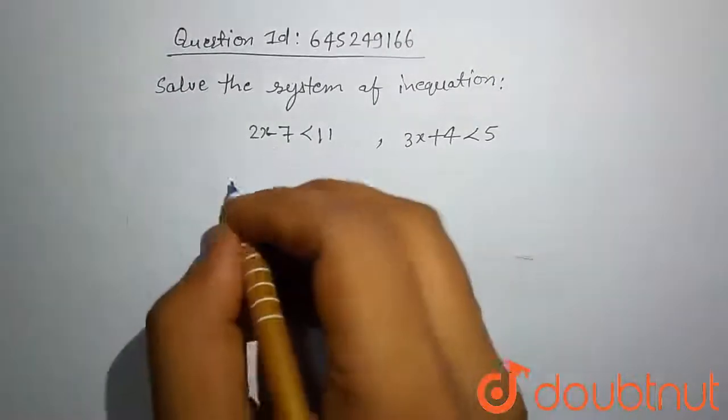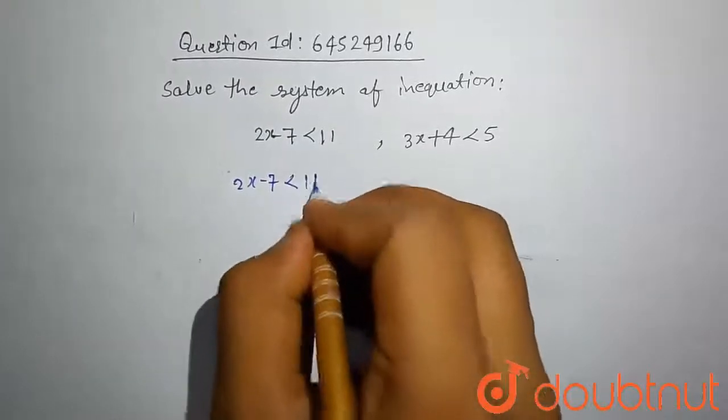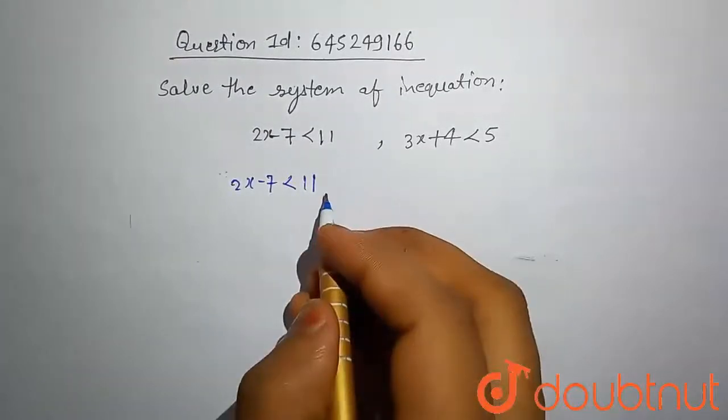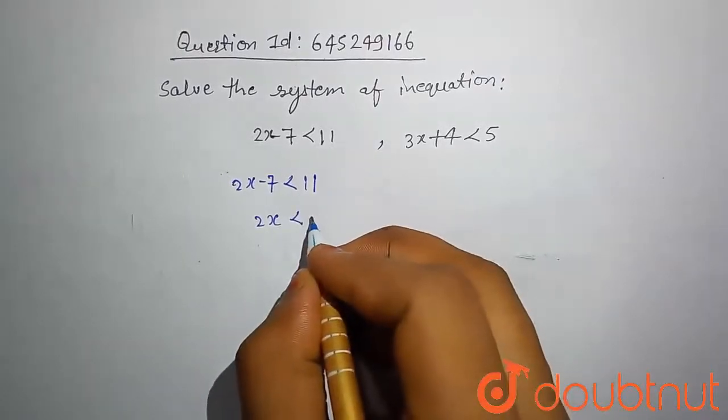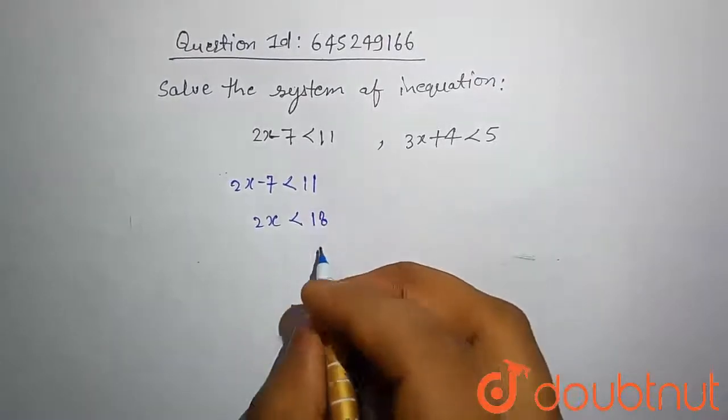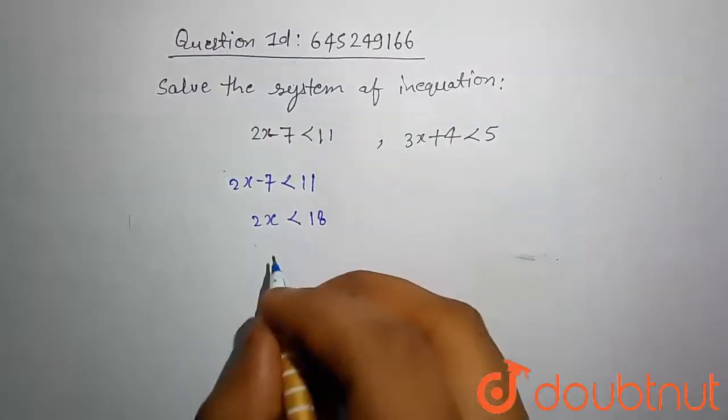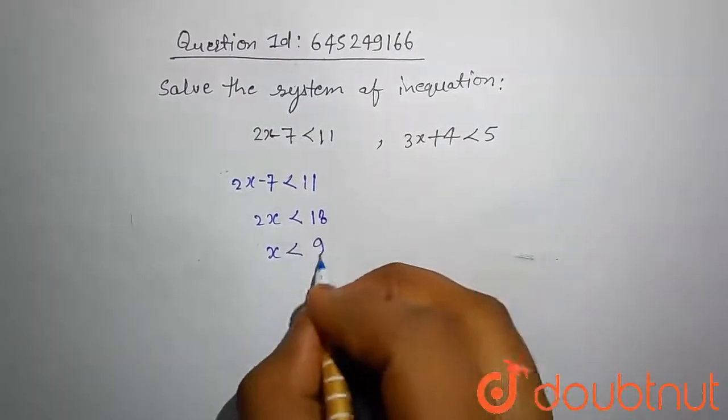Let's solve this. 2x-7 less than 11. If you take 7 to the right side, then this comes out 2x less than 18. If you divide by 2 on both sides, then this comes out x less than 9.